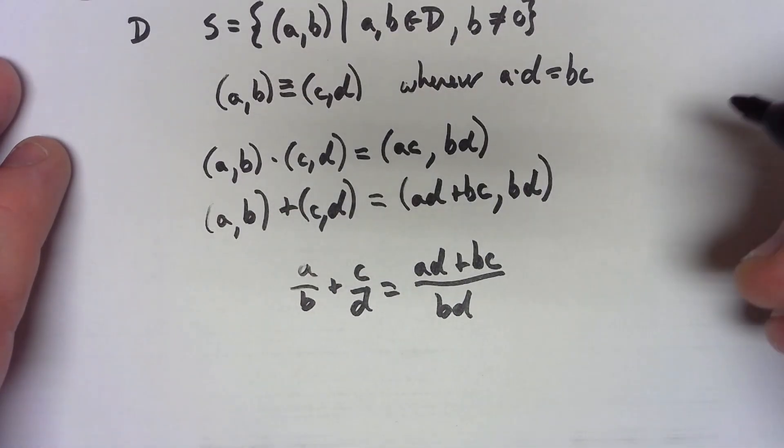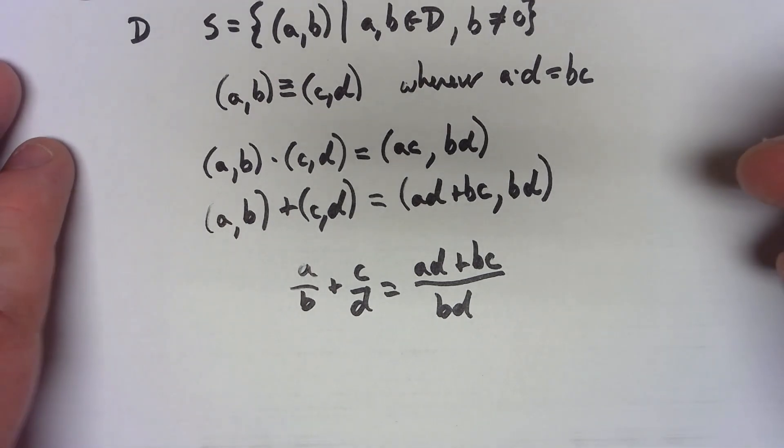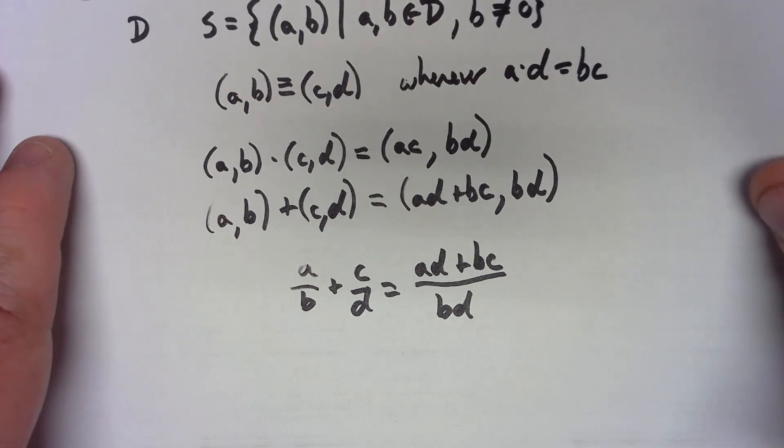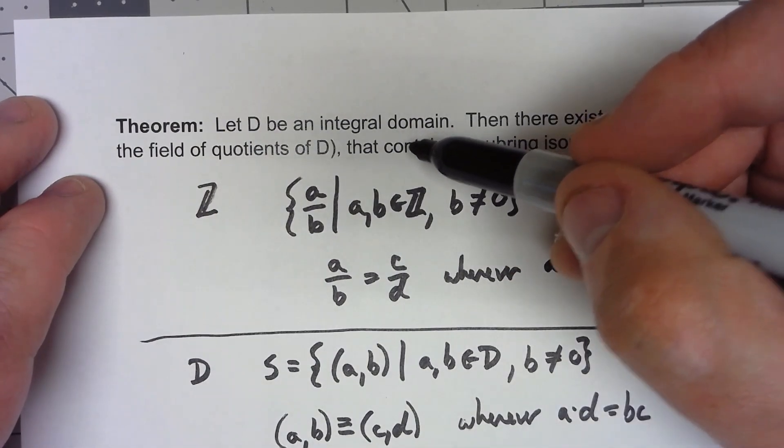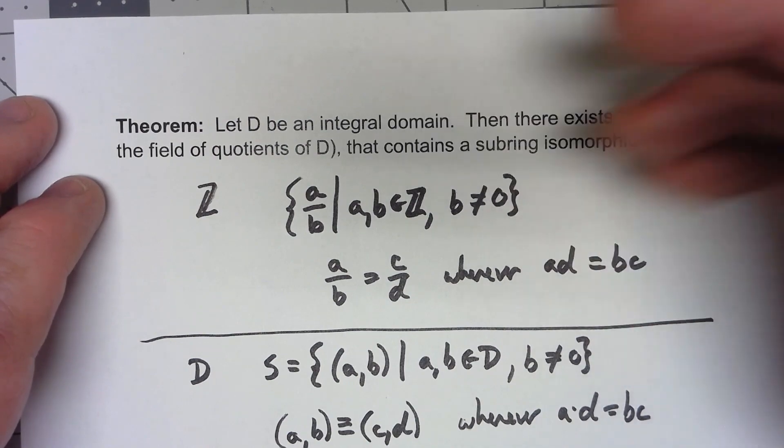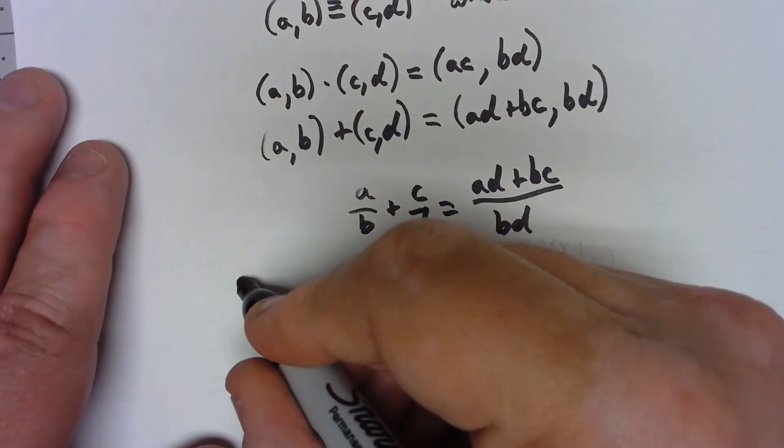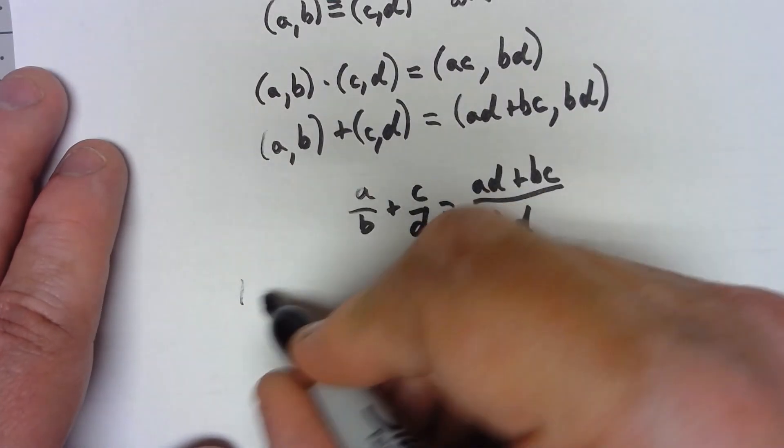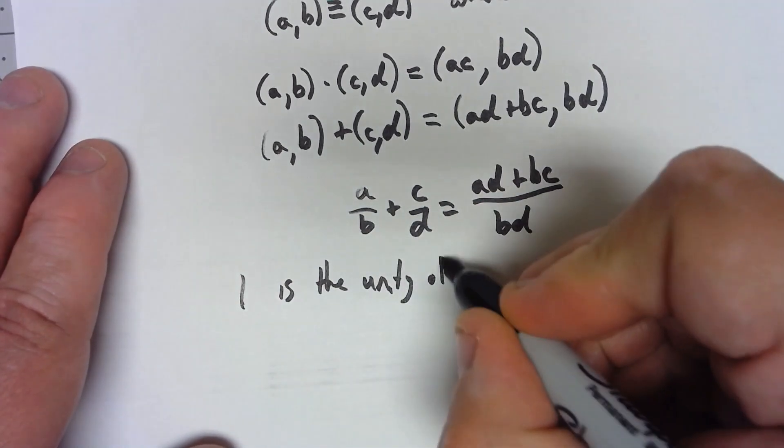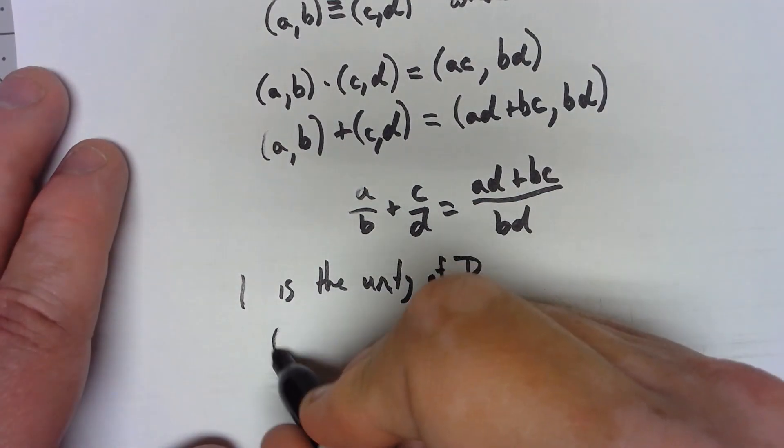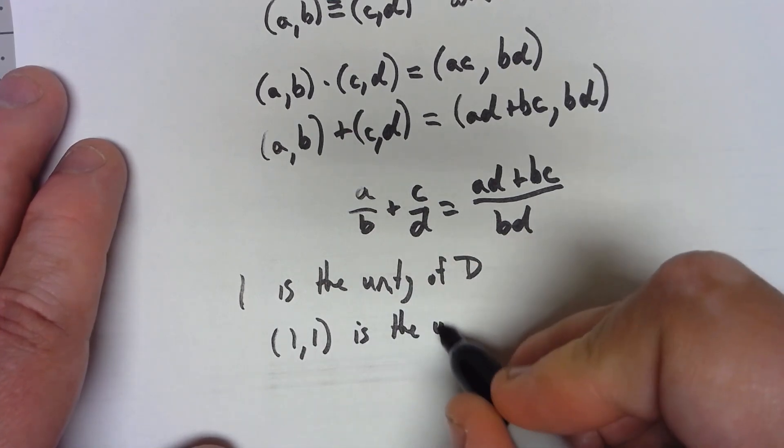Does it have a unity? Well, because D is an integral domain, one of the other things that had to do was that D had to have a unity. And so if I say 1 is the unity of D, then (1, 1) is the unity of S.